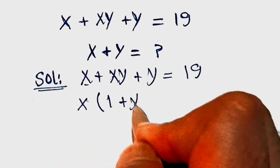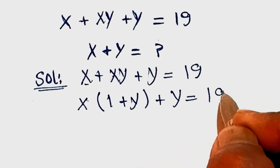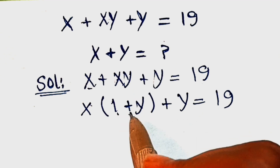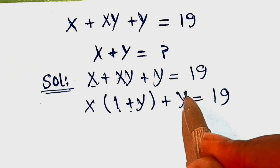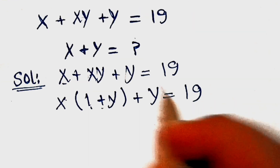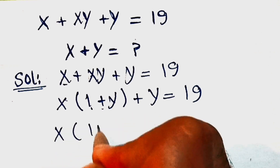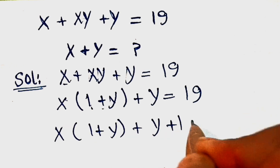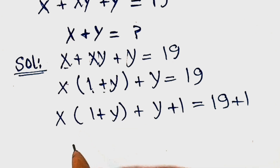So we get x times (1 plus y) plus y equal to 19. Now see, this (1 plus y) is in factor form. If we add 1 to the y term, it will also be in factor form. So we'll add 1 on both sides: x times (1 plus y) plus (y plus 1) equal to 19 plus 1.